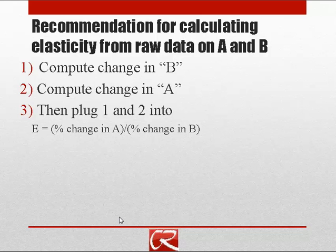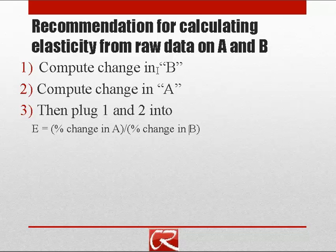I recommend breaking this down into three chunks. First, compute the percentage change in the B variable — the variable that's originally changing and causing a change in A. Second, calculate the percentage change in the outcome variable A. Now you have a sense of how much each variable changed. Third, compare those two — that's what gives you your elasticity. Calculating them separately in two steps makes it much easier to keep track of what's going on.